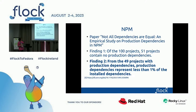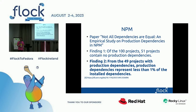This is my favorite one: the paper "Not All Dependencies Are Equal: An Empirical Study on Production of the NPM" ecosystem. There is a finding: out of 100 projects chosen for this study, only 51 have production dependencies, and from those, 39 had production dependencies present at less than 1% of all dependencies.